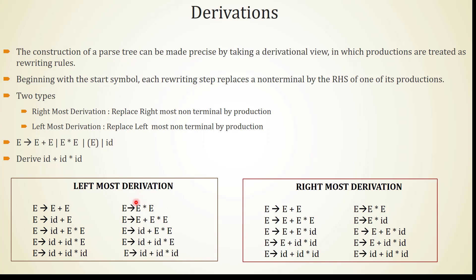There is another set of derivations also following leftmost derivation that derives the same string id+id*id. Similarly, in rightmost derivation we start with E+E but replace the rightmost non-terminal first. We replace that E with E*E, then replace the rightmost E with id, then the next E with id, and finally the remaining E with id, again obtaining id+id*id.